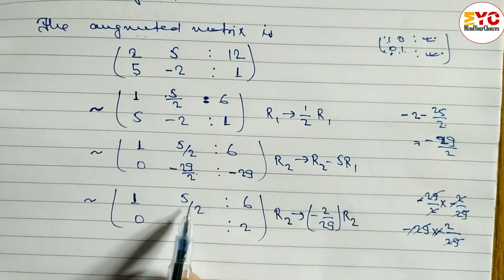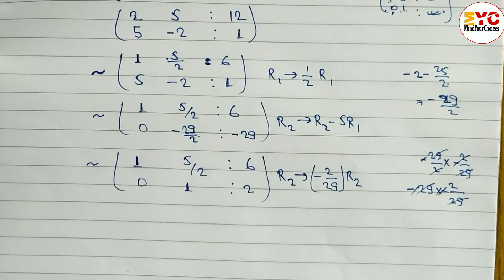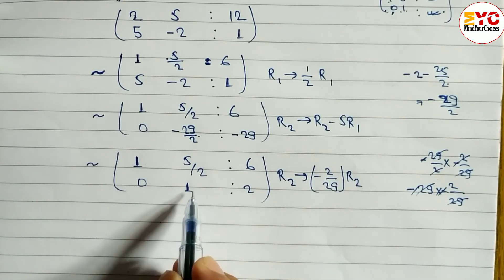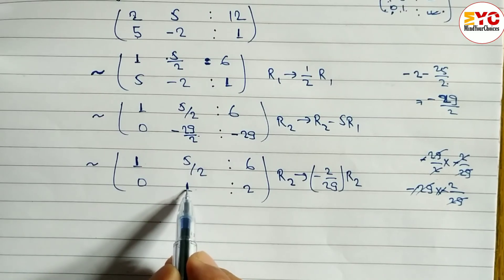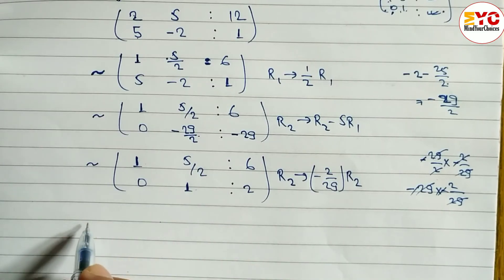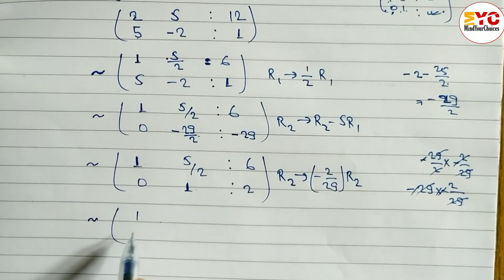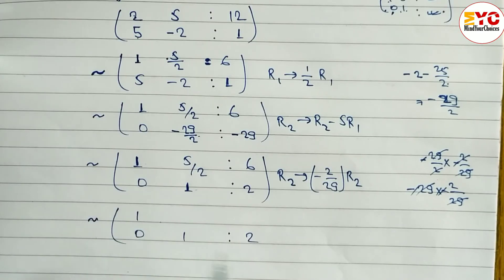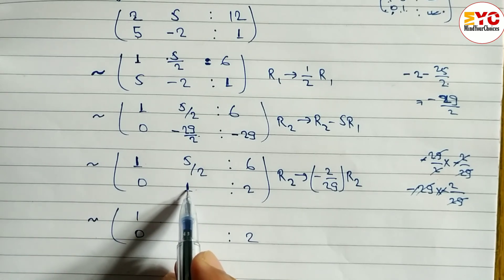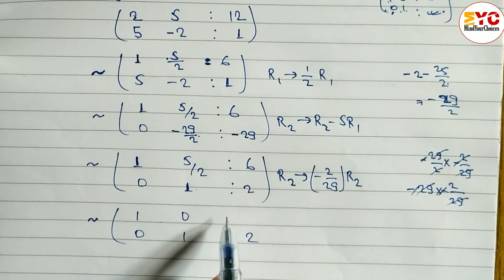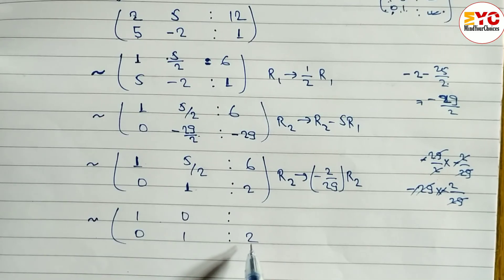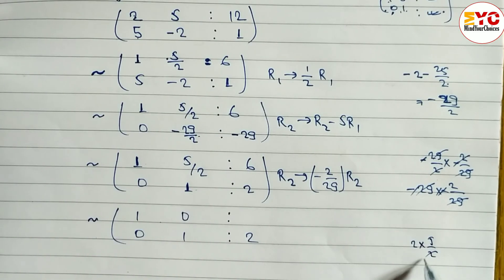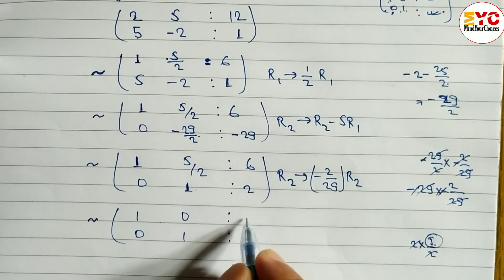Now we have 1, 0, 0, 1 structure and we need 0 in the second column of row 1. How to convert 5/2 to 0? Multiply row 2 by 5/2 and subtract from row 1. Row 1 stays 1, and 0 multiplied by 5/2 is 0, so subtracting gives 1. For the y column: 5/2 minus 5/2 times 1 gives 0. For the constant: 6 minus 5/2 times 2 — the 2s cancel giving 5 — so 6 minus 5 gives 1.